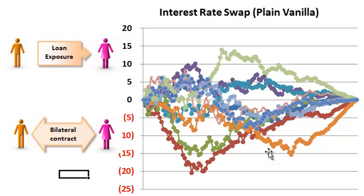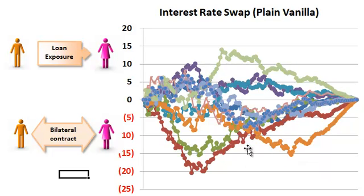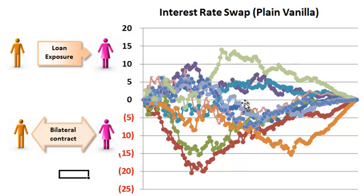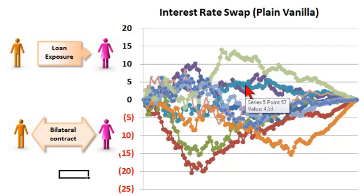This counterparty is going to be in a losing position on the swap, so they're going to be down here in negative territory. In terms of counterparty credit risk, we're not as concerned with this — this counterparty is paying a floating rate, interest rates go up, this swap is a losing position for them, and they don't really have counterparty credit risk. On the other hand, if interest rates go down and this counterparty is paying a floating rate, now the swap is becoming valuable to them. They are gaining on the swap, and so we're up here in positive territory.